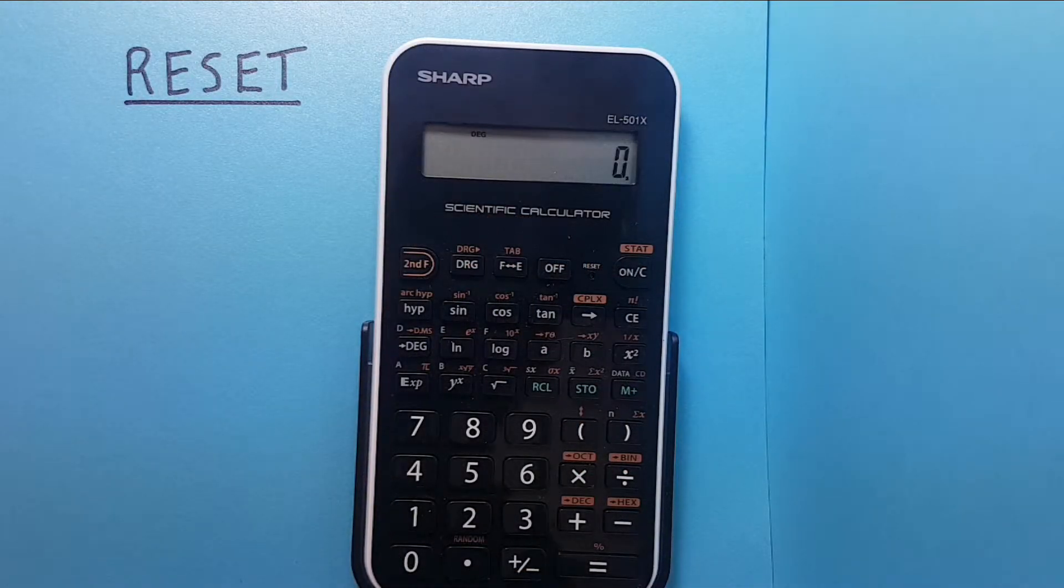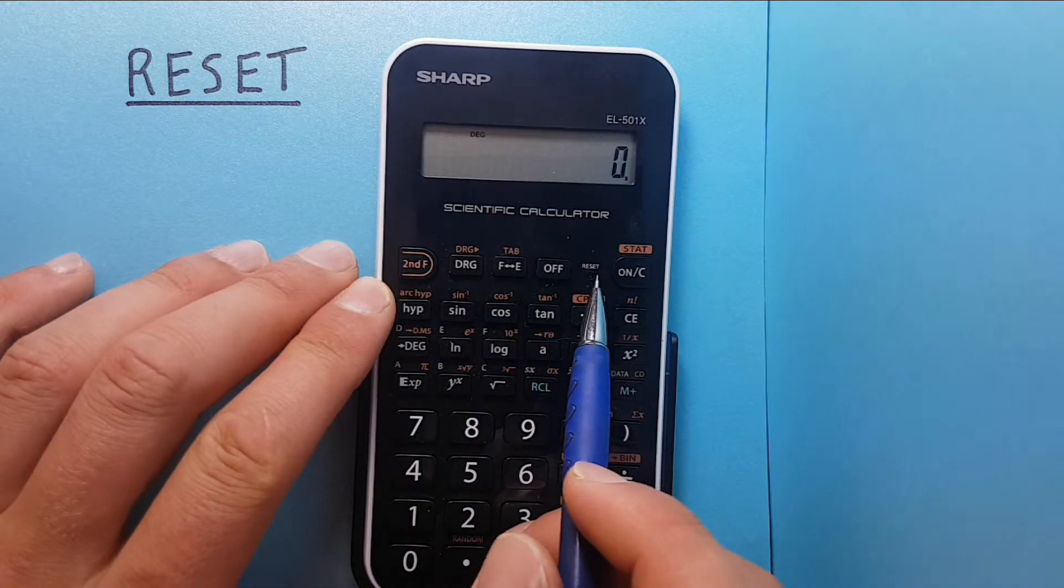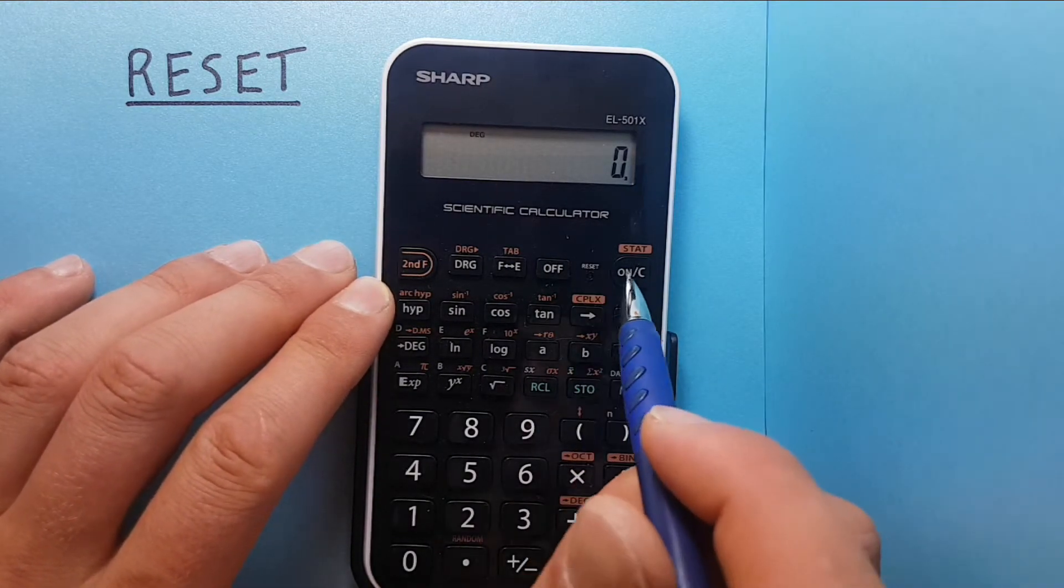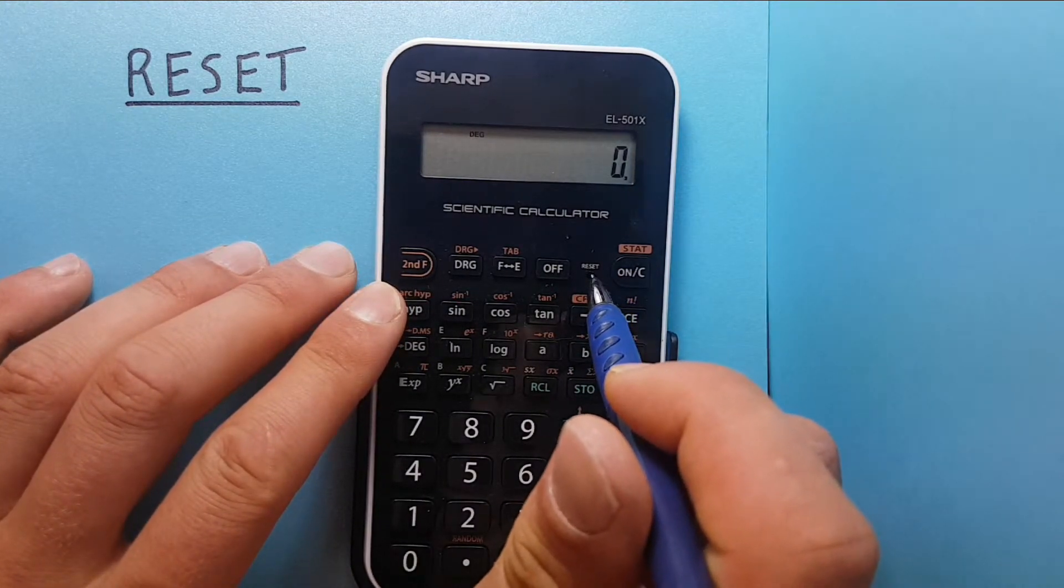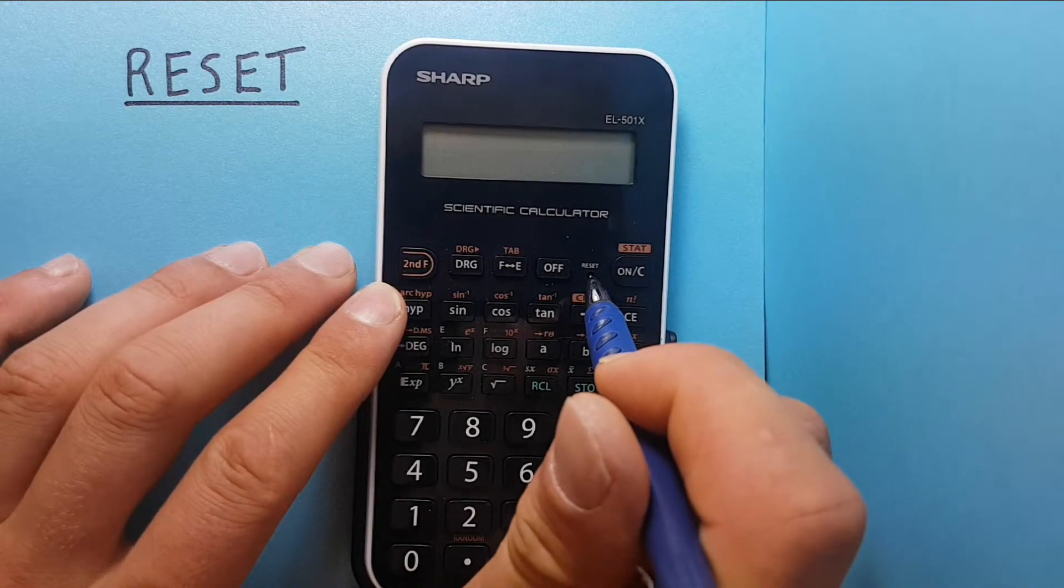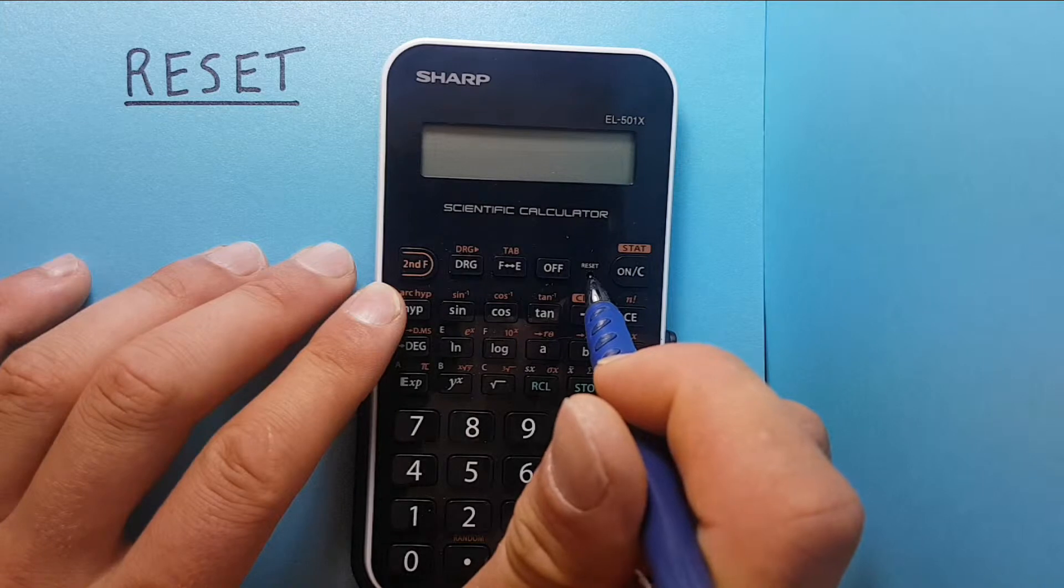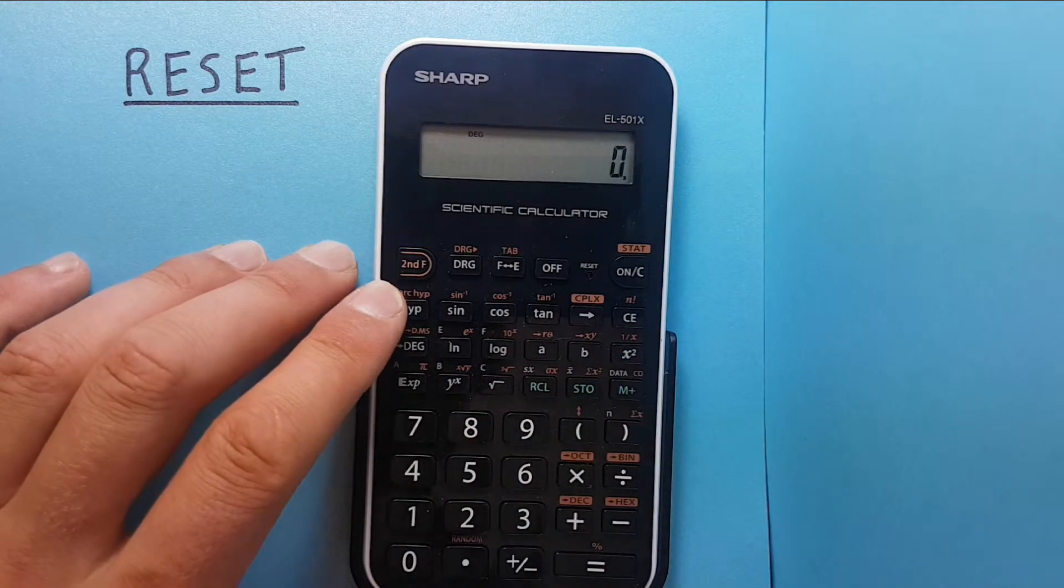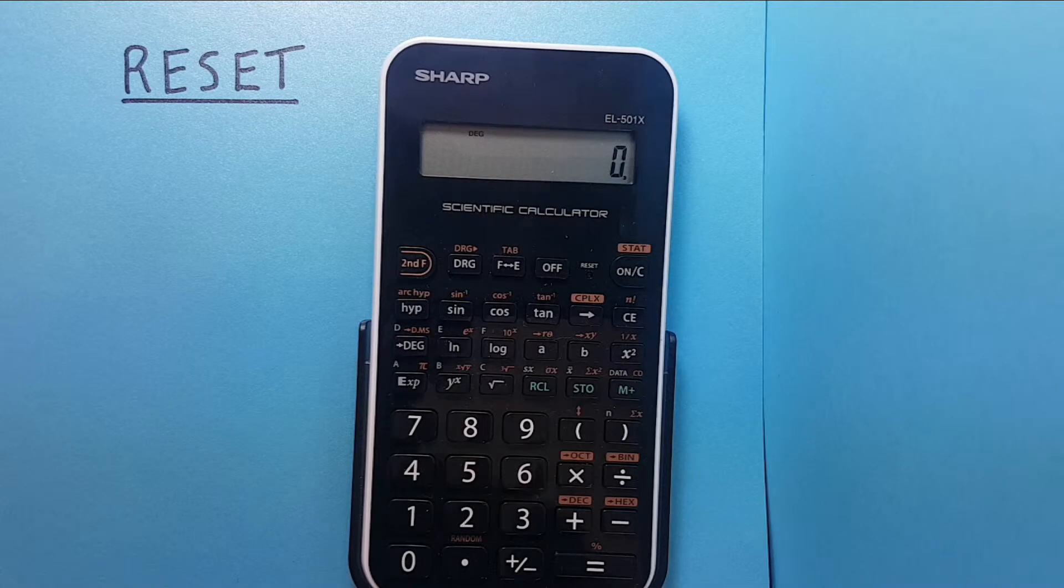To reset this calculator, we will find the reset button here beside the on button and press down on it with our pencil until we feel the button go in. You can see the screen is going off and release. This shows us that the calculator has been reset.